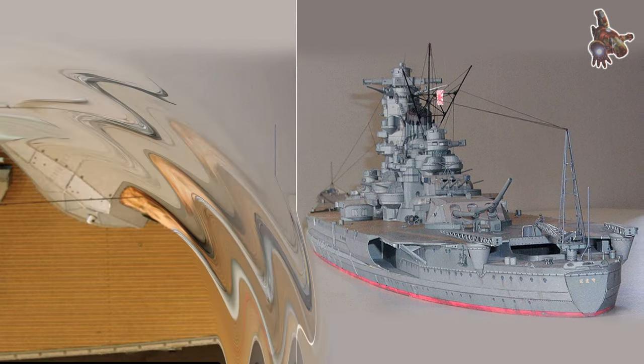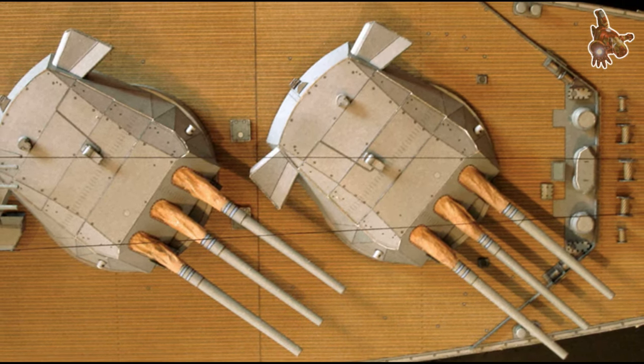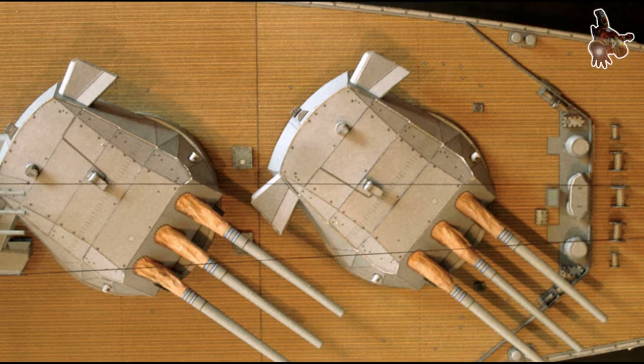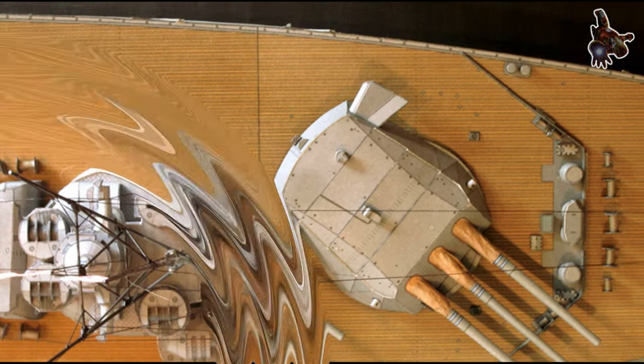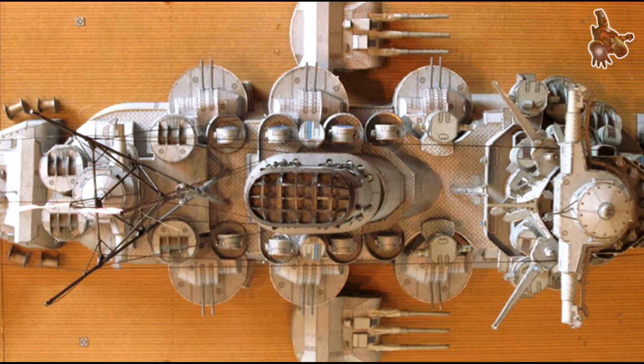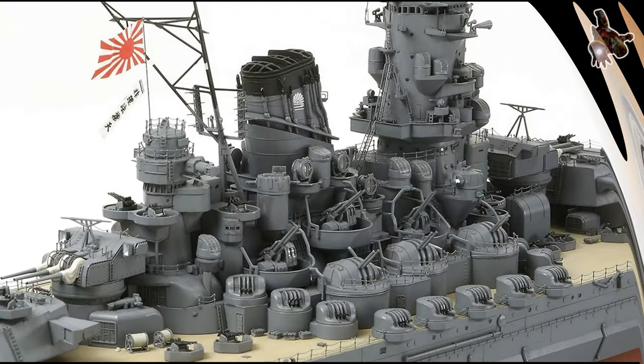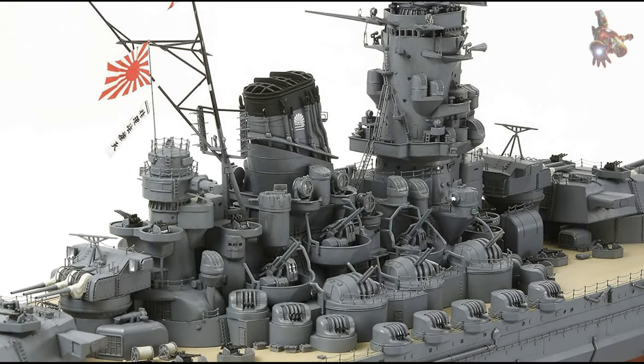For modeling turrets with blast covers over gun ports, as in turrets A and B, cut white toilet paper according to the template on sheet 36. Glue the covers from inside the turret face for a clean transition, then apply a solution of white glue and water to create a papier mache effect, shaping the covers around the barrels.